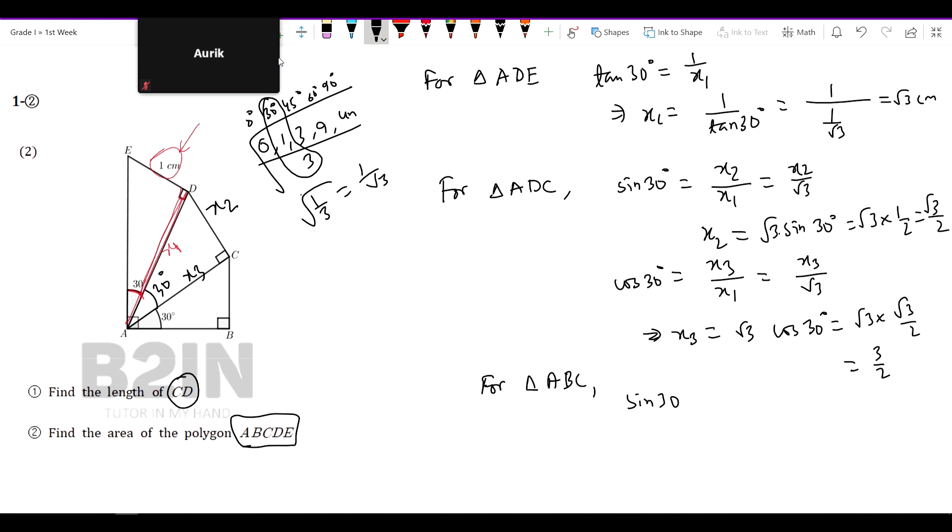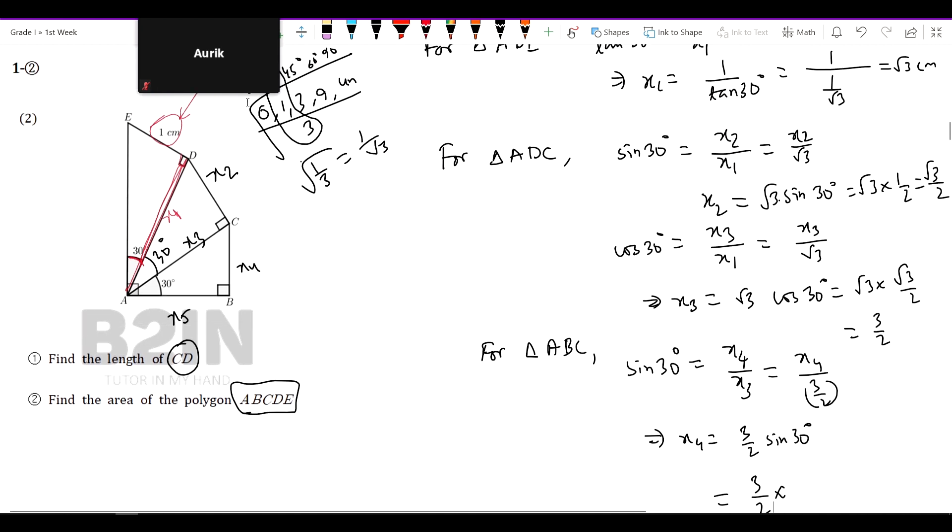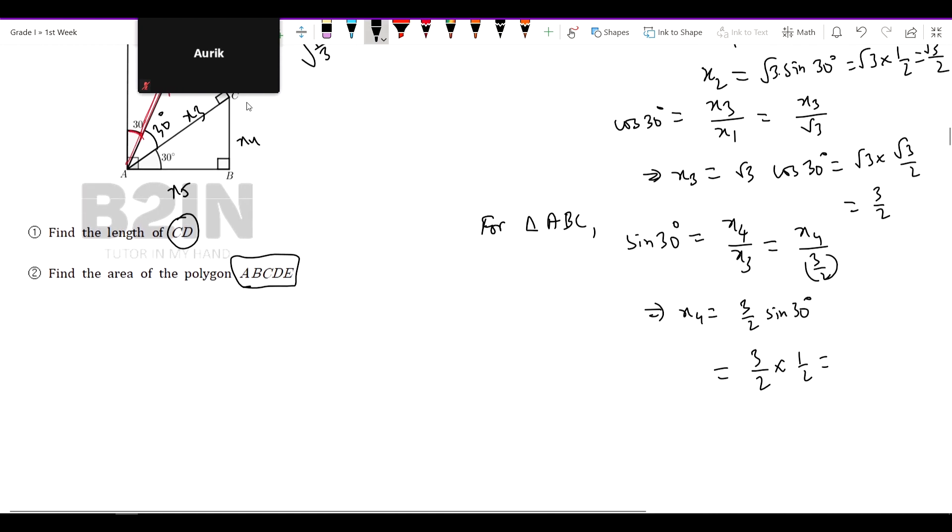Let's do the same thing. So x4 divided by x3, x3 is value. So x3 is value, 3 by 2. Then x4 is equal to, so x3 is equal to 3 by 2. So x3 is equal to sin 30, so x3 is equal to sin 30.